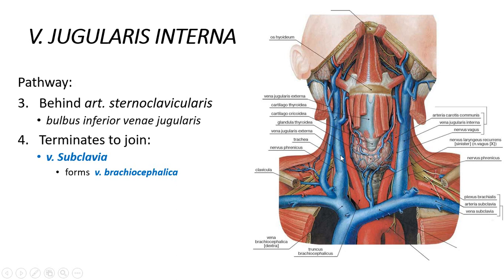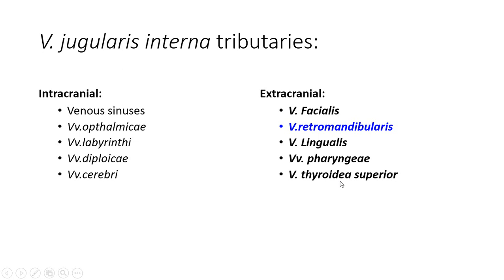The vein descends and terminates as another enlargement, the bulbus inferior venae jugularis, then connects with the vena subclavia to form the vena brachiocephalica dextra, and the same happens on the left side, sinistra. The vena jugularis interna receives intracranial tributaries — basically all venous sinuses, the veins of the brain, veins of the diploe of the skull, and also the ophthalmic and labyrinthine veins.